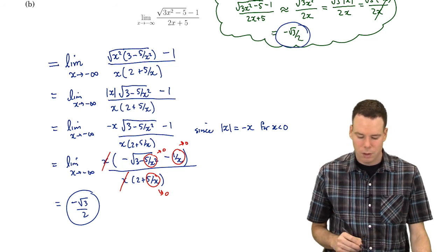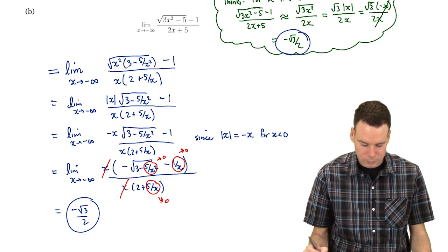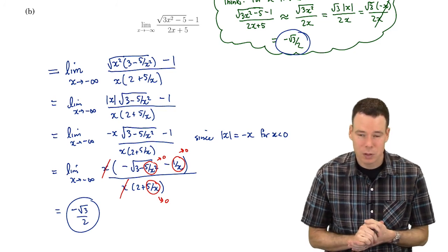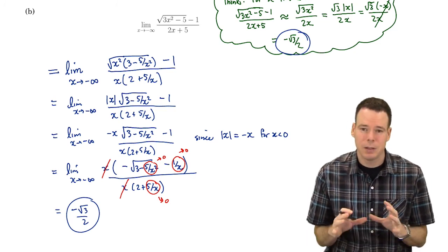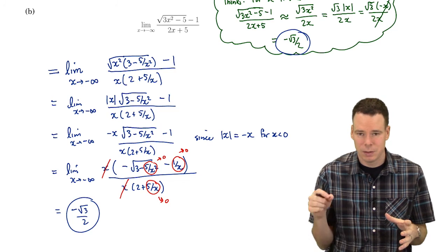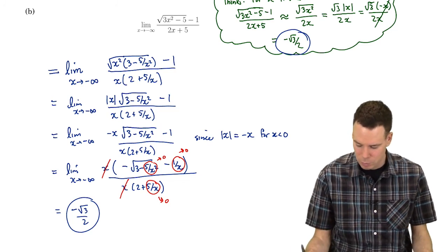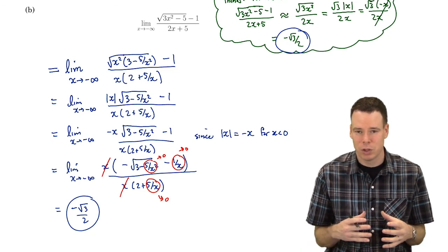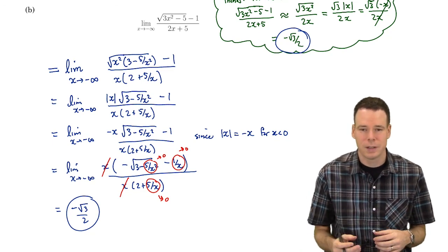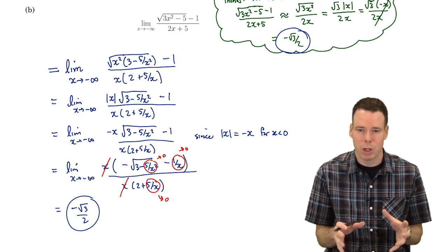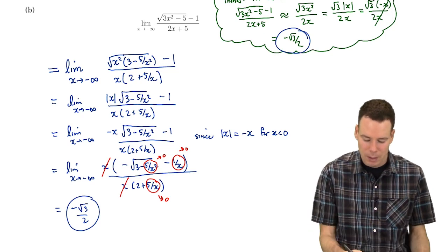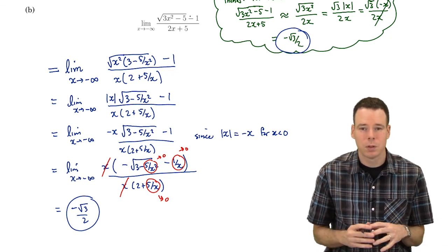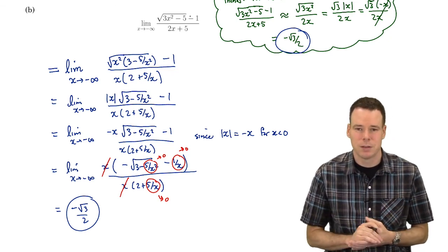So that's the idea with these limits involving infinity. You're going to try to manipulate the expression so that everywhere you see an x, it's sitting downstairs in the expression. Or that's not always the goal. Perhaps the expression involves an exponential function or an arc tangent, and then you're going to have to use properties of those individual functions. But here we're looking mostly at rational and algebraic functions involving square roots. Then I'm going to try to put the x's downstairs.